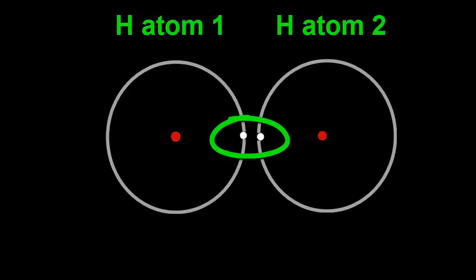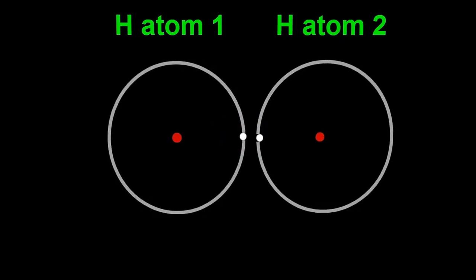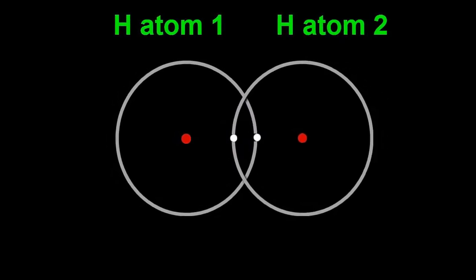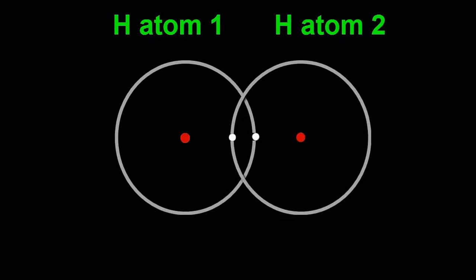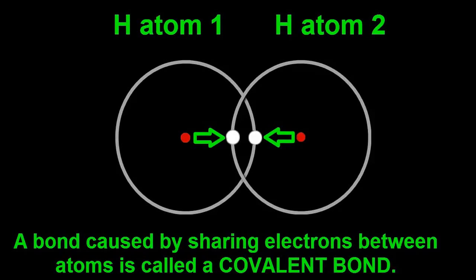Because the shells are partially empty, they can overlap and merge, and the shared electrons then spend more of their time between the two nuclei. Because the nuclei are both attracted to both electrons between them, the atoms stick together as a stable molecule. This joining caused by atoms sharing their electrons is called a covalent bond.